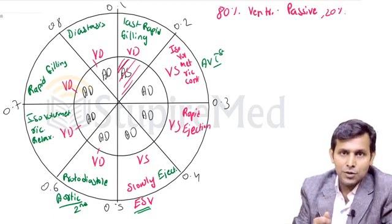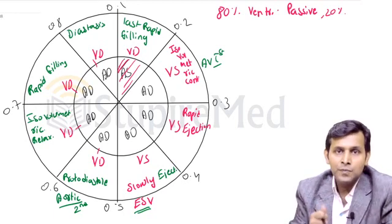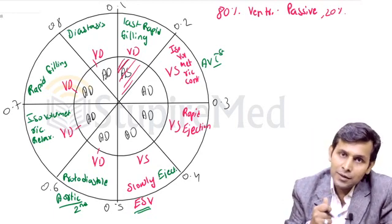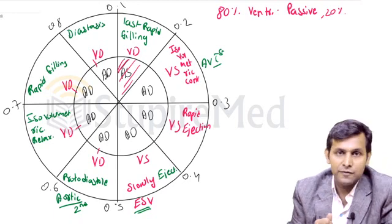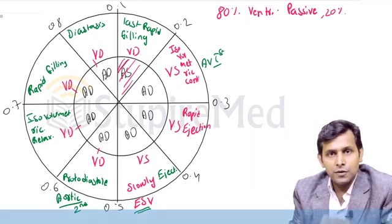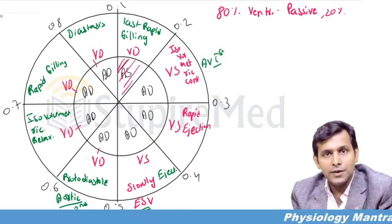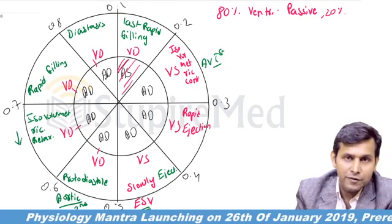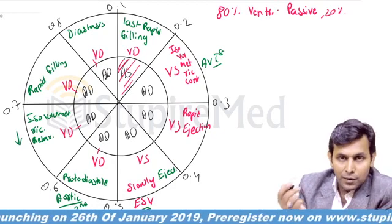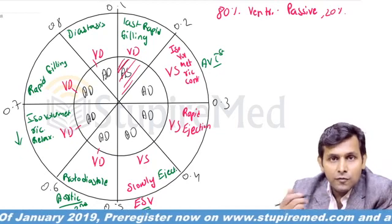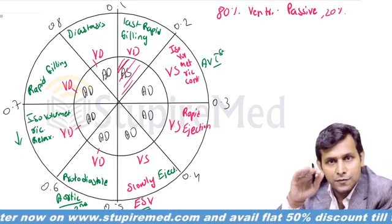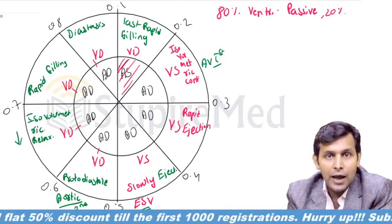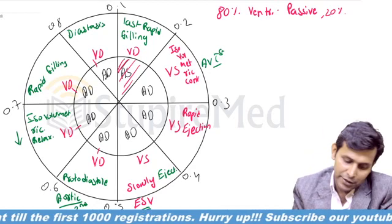So isovolumetric contraction starts with the first heart sound, whereas isovolumetric relaxation starts with the second heart sound. After the aortic valve closes, both valves are closed — the aortic valve is closed and the AV valve has not yet opened — and the ventricles are relaxing as a closed chamber. During isovolumetric relaxation there is no change in volume but a tremendous decrease in pressure, so the pressure in the ventricle decreases significantly. At the end of isovolumetric relaxation, ventricular pressure is far less than atrial pressure, so the AV valves open.